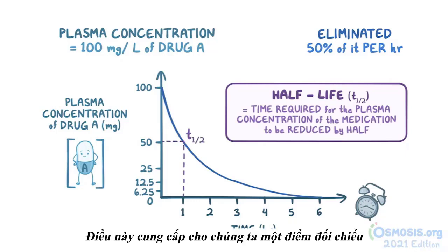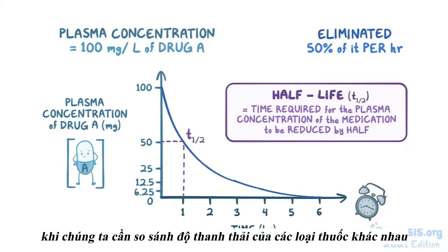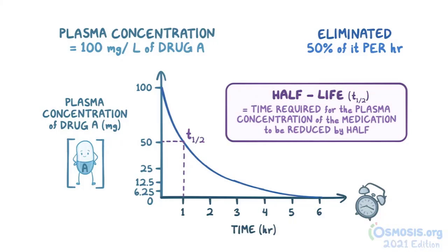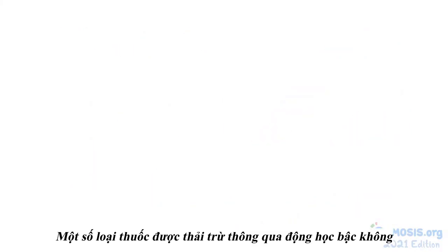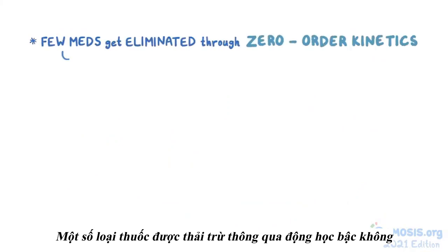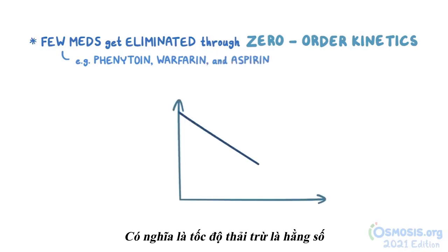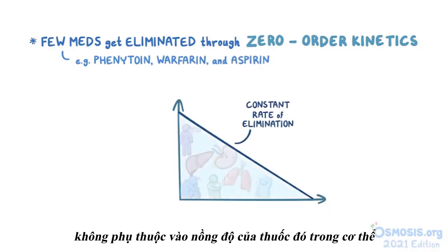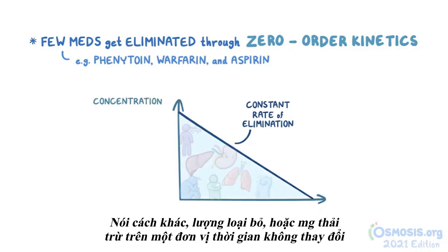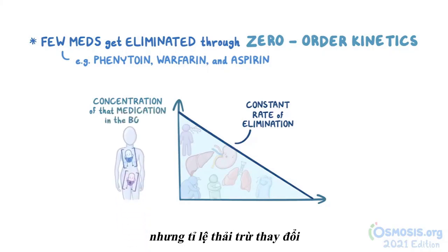There are a few medications which are eliminated through zero-order kinetics, like phenytoin, warfarin, and aspirin. This means the rate of elimination is constant, independently of the concentration of the medication in the body. In other words, the absolute amount in milligrams eliminated per unit of time stays the same, but the fraction eliminated changes.